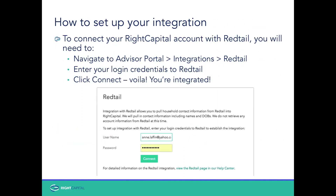So how do we actually set this up? You're going to go to your advisor portal inside of Wright Capital — so obviously you're logged into Wright Capital — and go to Advisor Portal, then Integrations, then Redtail. We'll then need your login credentials for Redtail, and then just click Connect. It's really that simple. If you run into any issues or would like someone to walk you through it step by step, we can do that as well.